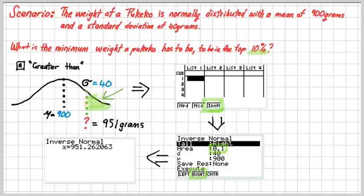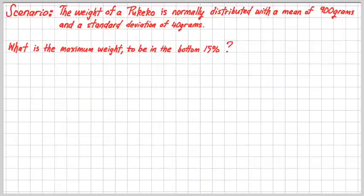Now let's consider another scenario. We are looking at the same Pukekos who are normally distributed with a mean of 900 and a standard deviation of 40. But this time, we are going to ask the question, what is the maximum weight to be in the bottom 15%?